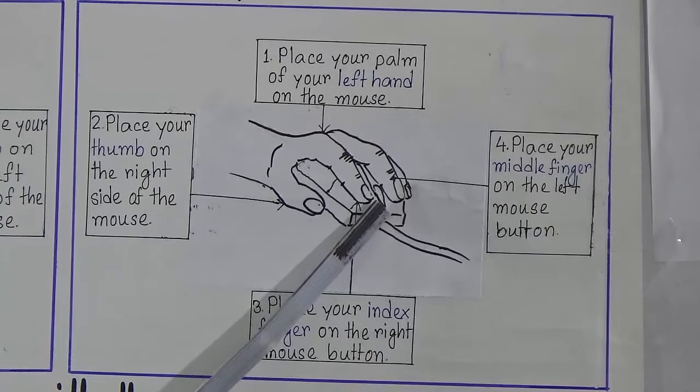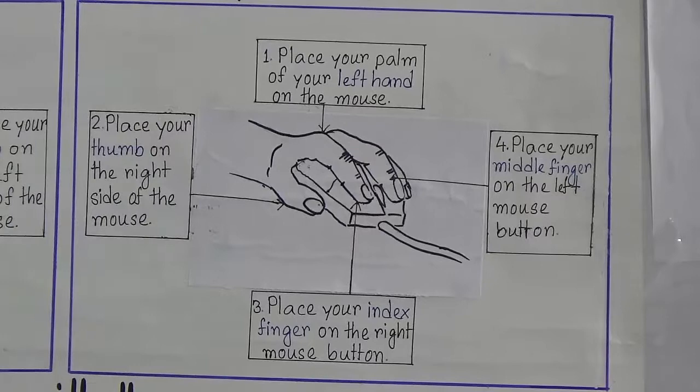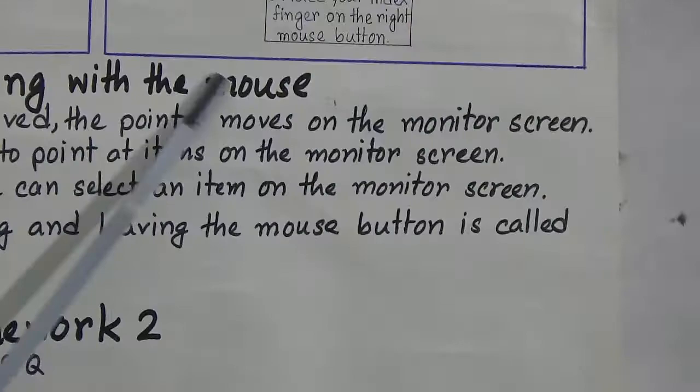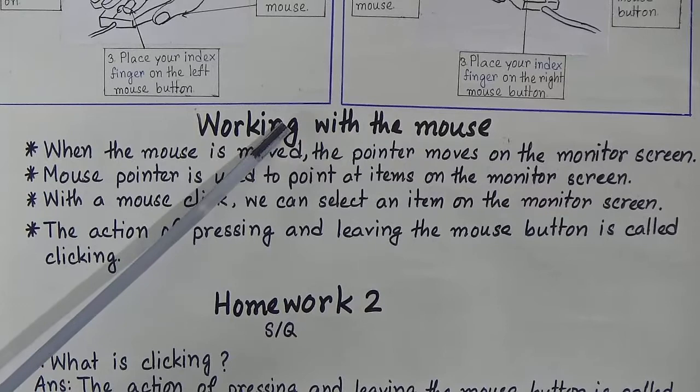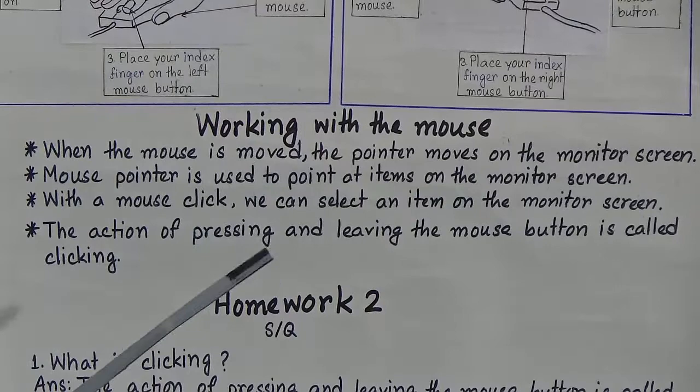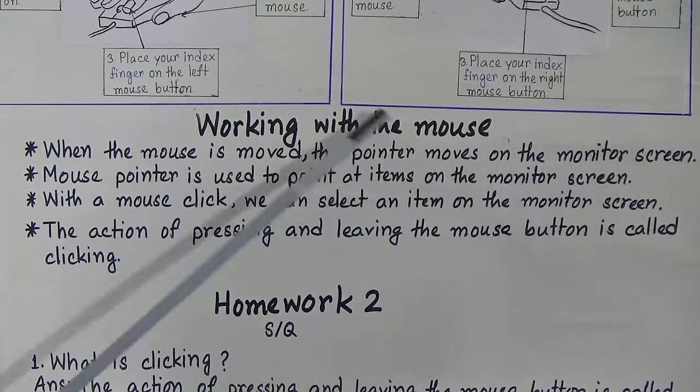So now we have learned how to hold a mouse — right-handed follows one set of steps, left-handed follows the other. Now we will know how to work with the mouse. When you press the start button, the computer will open and you will find an arrow on the monitor screen. When the mouse is moved, the pointer moves on the monitor screen.